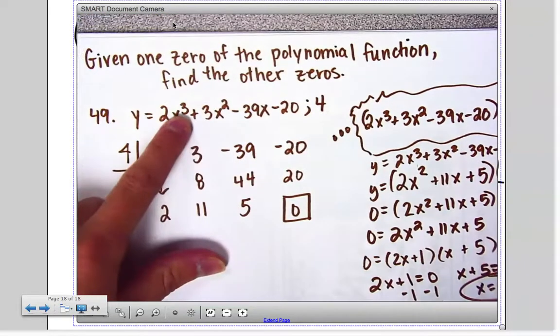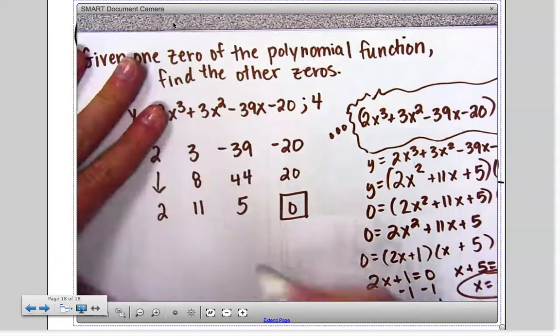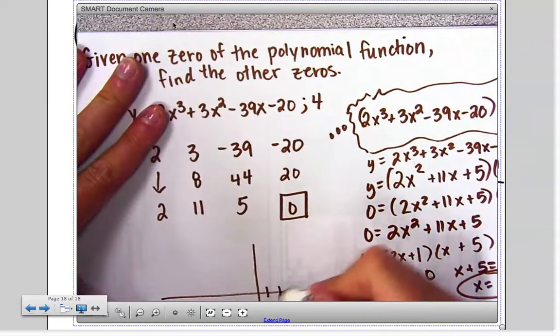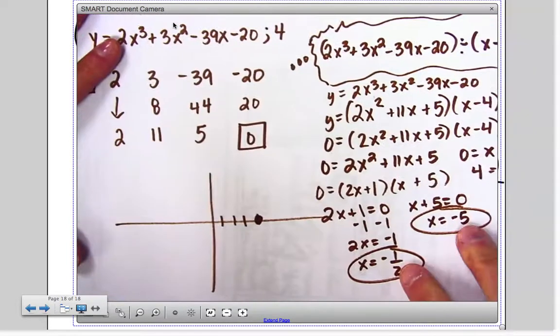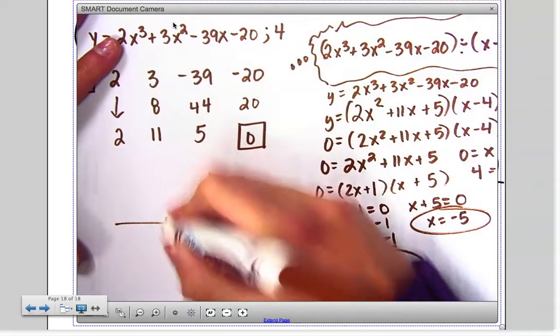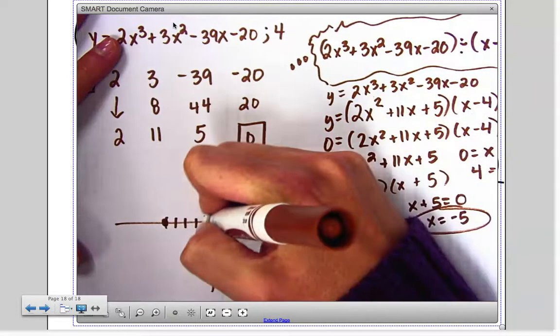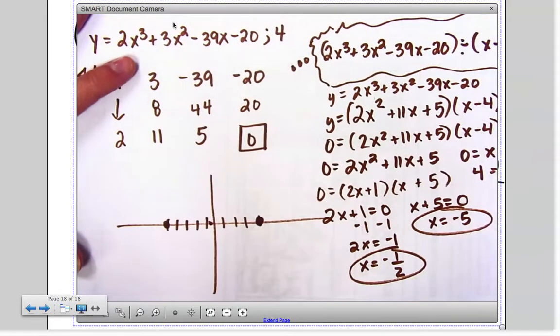I'm supposed to be able to represent three x-intercepts. Here is the first one, which visually would mean I cross the x-axis at four. And here are the other two. So I cross at negative five and negative one-half.